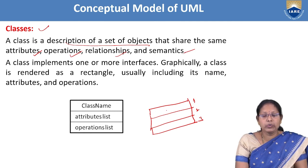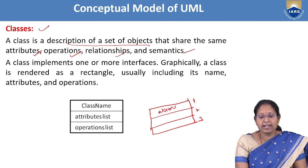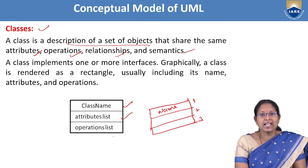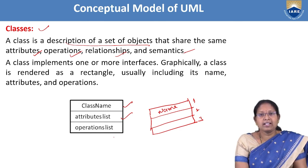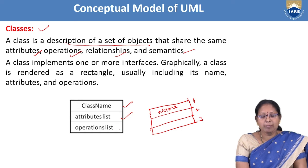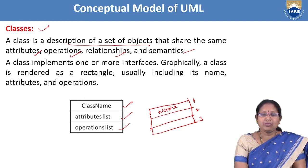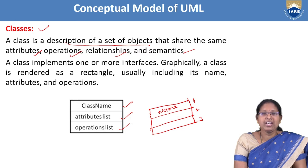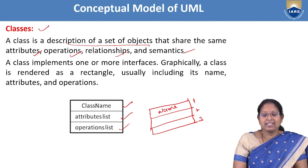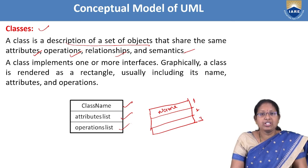A class is graphically denoted as a rectangular box with three compartments. The first compartment is for the name of the class, the second is for attributes — for example, color, taste, size, shape — and the third compartment is for operations, which define what the class can do, such as determining the taste of the fruit.